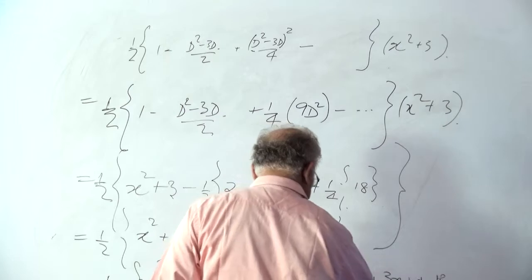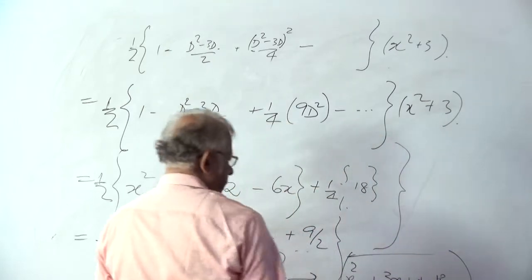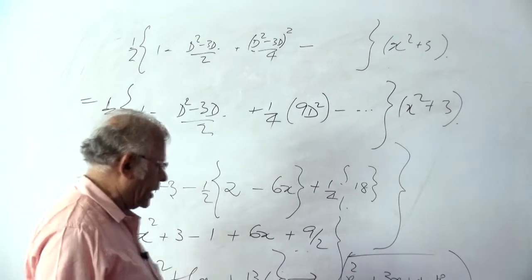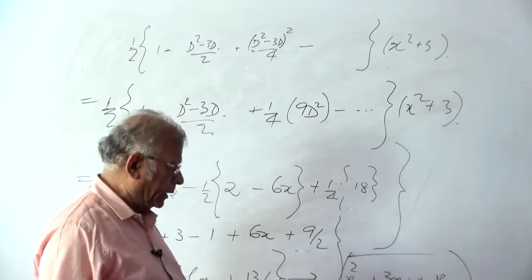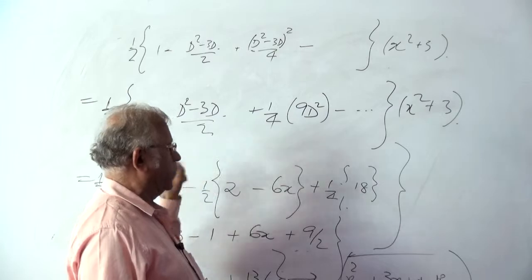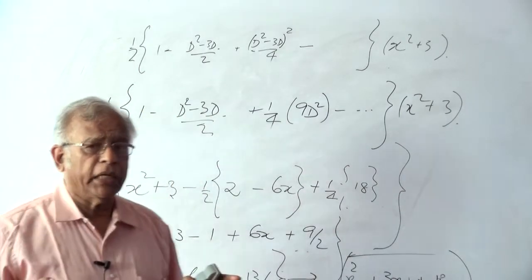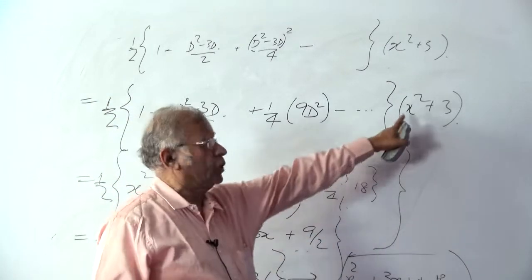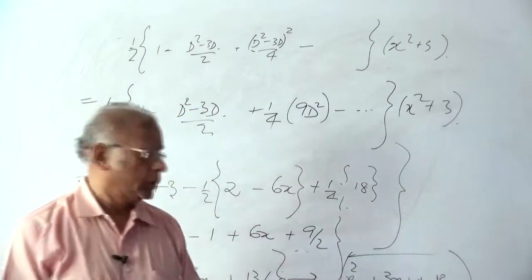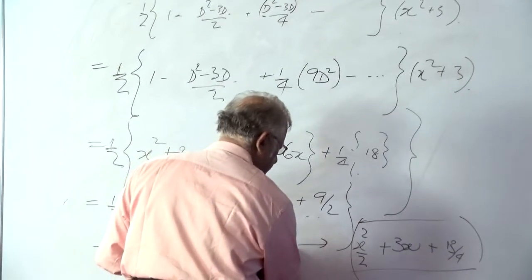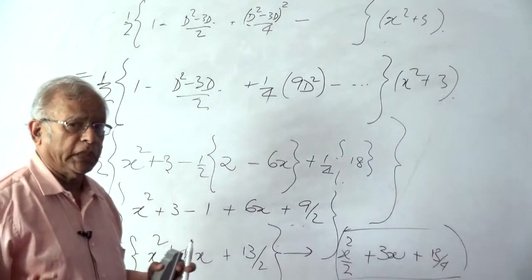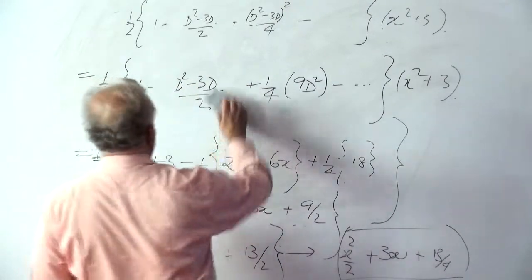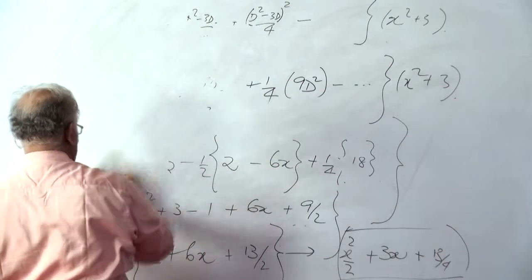This is our particular integral. We must verify that it satisfies the original equation — that is, applying the operator D squared minus 3D plus 2 to this particular integral should recover x squared plus 3. We will operate f(D) on this particular function to confirm.